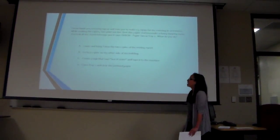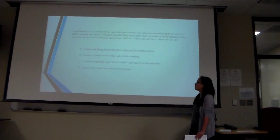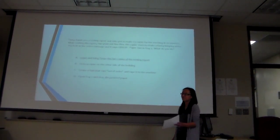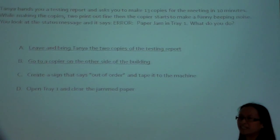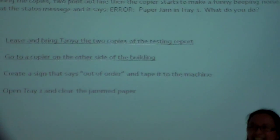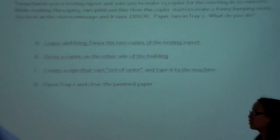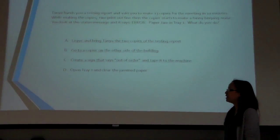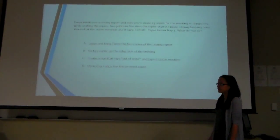Option A: leave and bring Tanya the two copies of the report. Option B: go to a copier on the other side of the building. Option C: create a sign that says 'out of order' and tape it to the machine. Or option D: open chain one and clear the jammed paper.